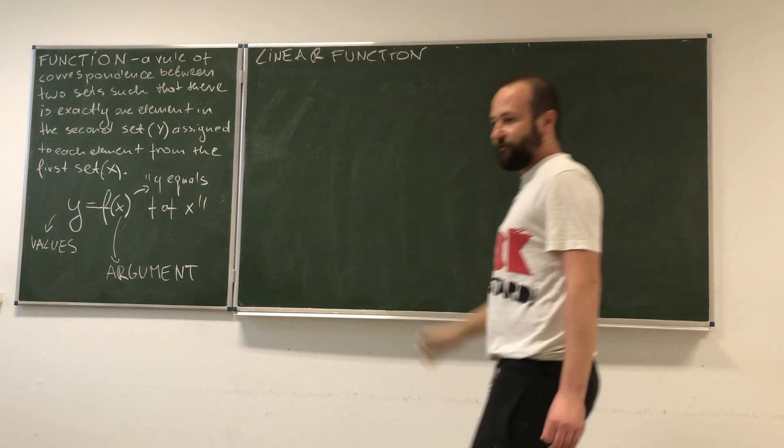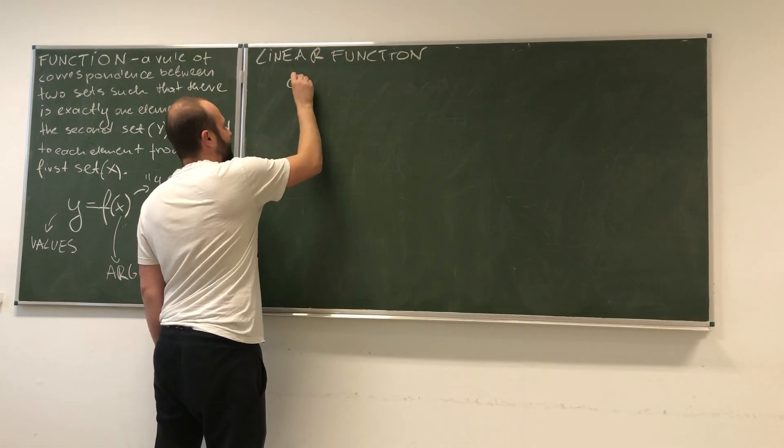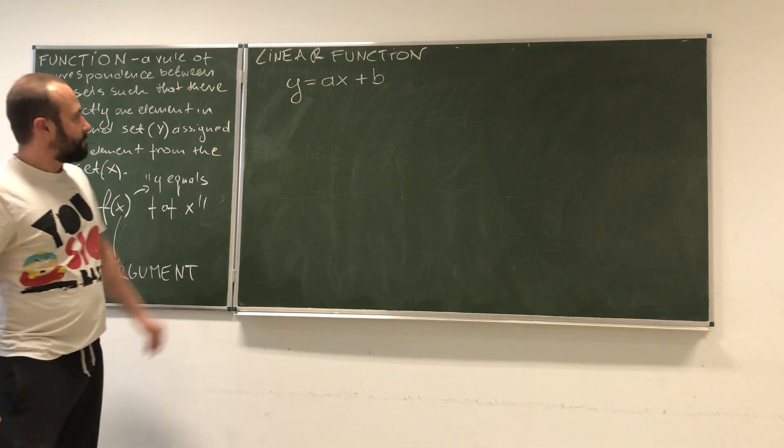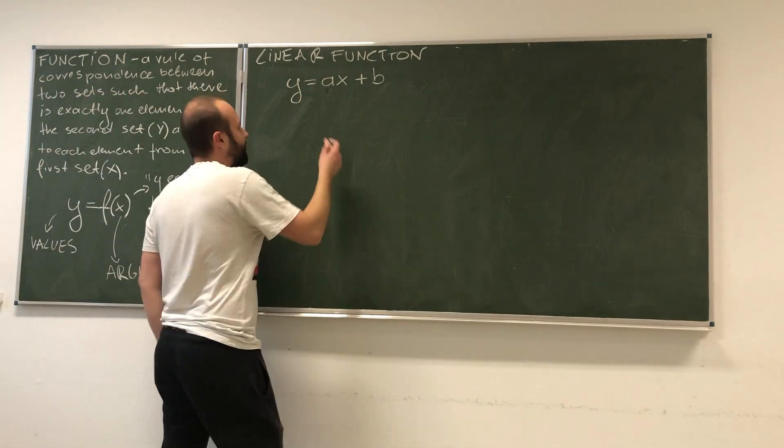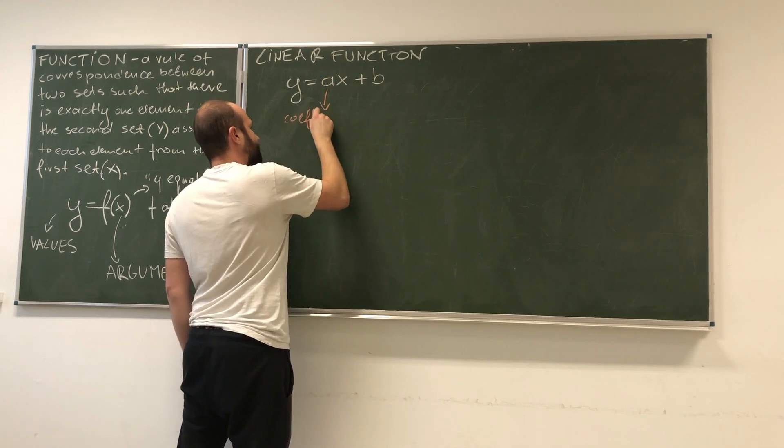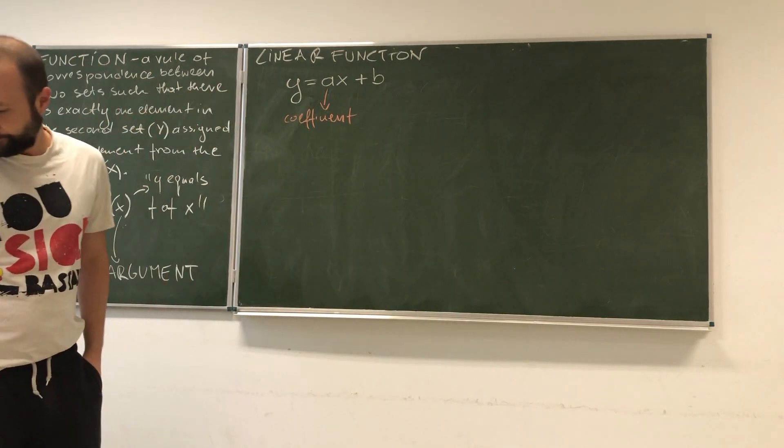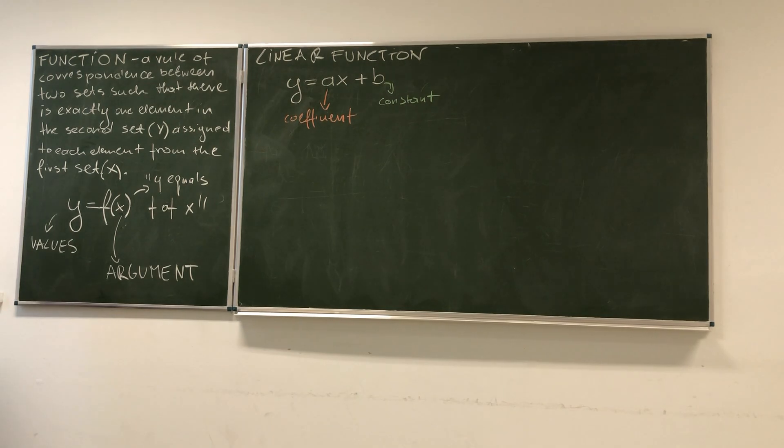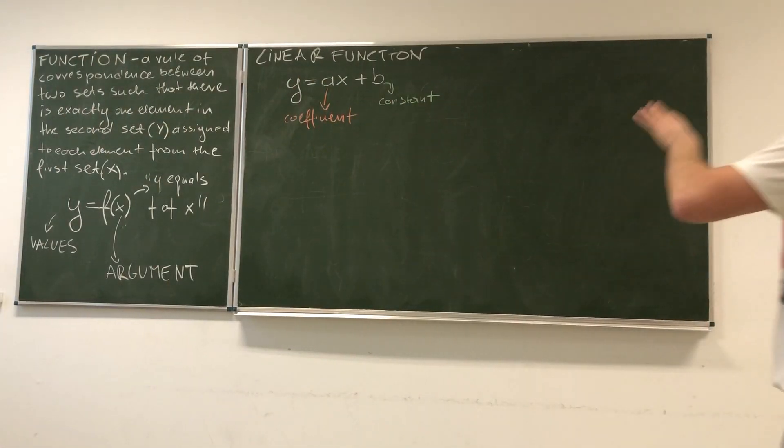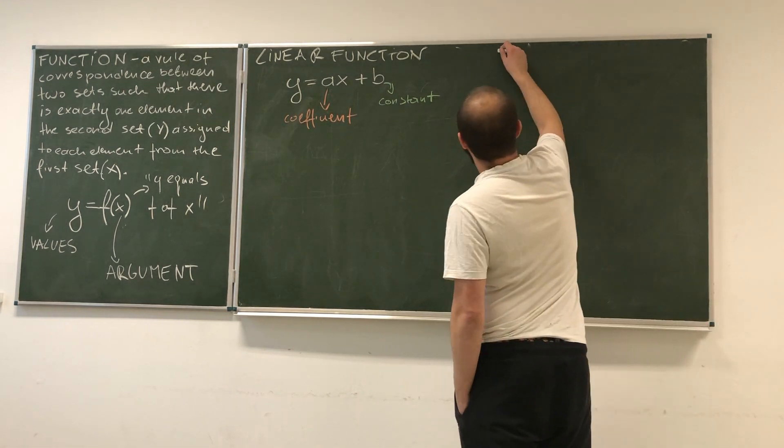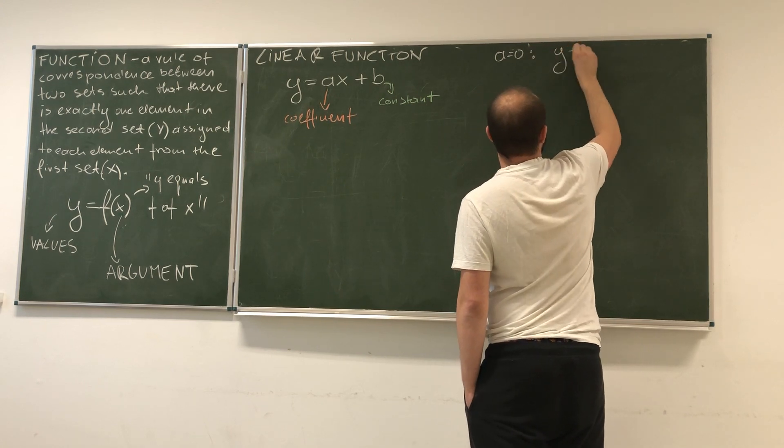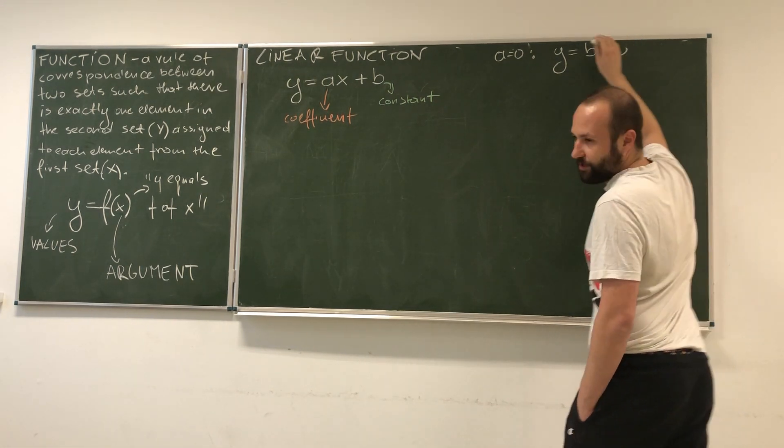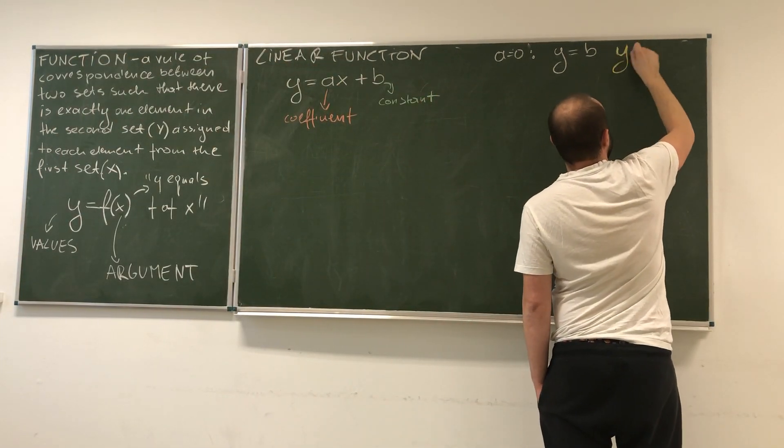Linear function is given by the formula y equals a times x plus b. The a that multiplies the argument we call coefficient, while b we call constant. Let's start with the simplest case where a equals 0. In this case, the function formula is y equals b. To make things simpler, let's say y equals 2.